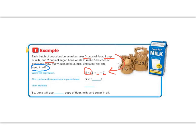So 3 plus 1 plus 2 is 6. And now we get to multiply 5 times 6. 5 times 6 gives us 30. So Lena is going to need 30 cups total of milk, flour, and sugar in all.